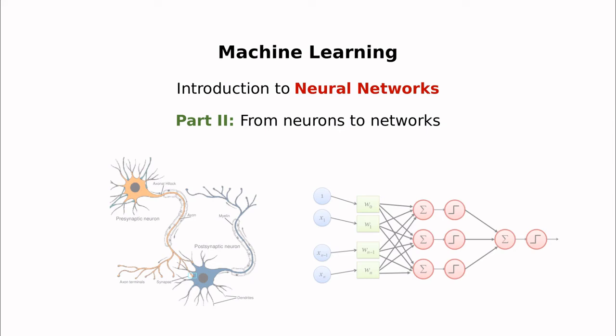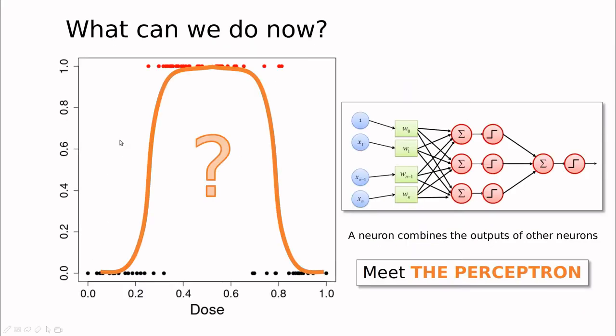In the previous video, we used the concept of neurons as an attempt to go from 0 and 1 to something smoother, but we ended up realizing that neurons are nothing new. It's more or less like logistic regression. And then we faced this problem.